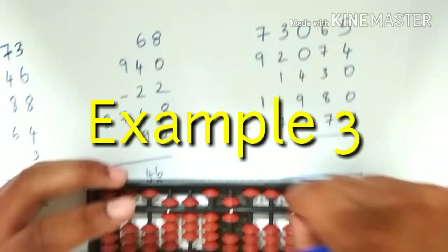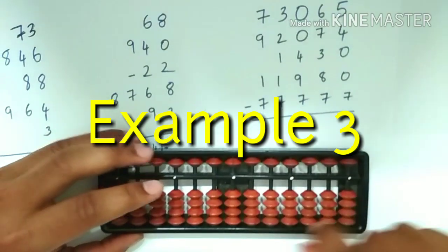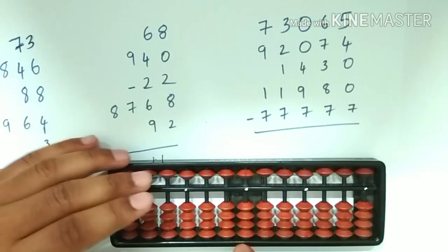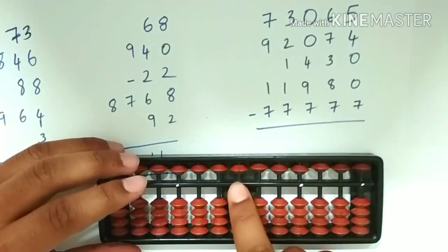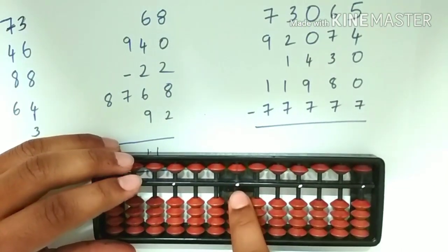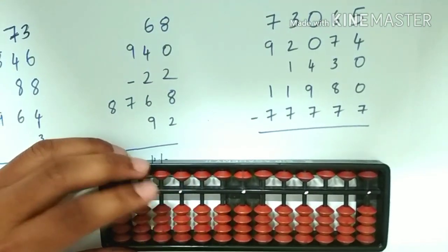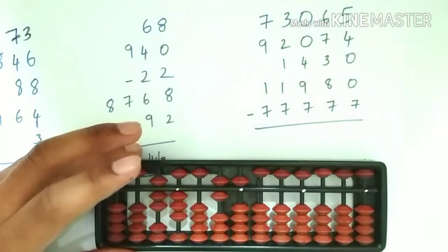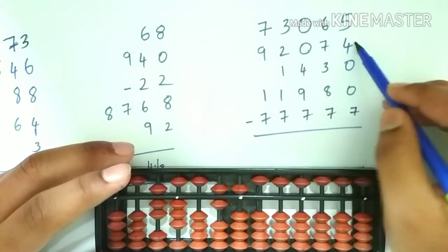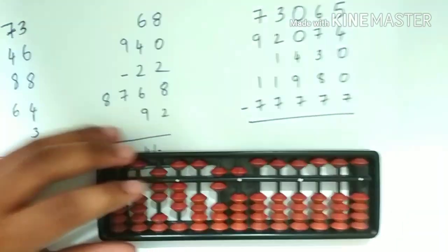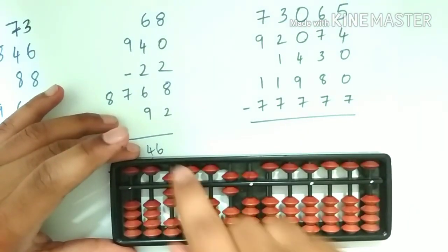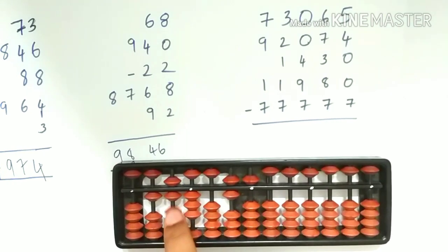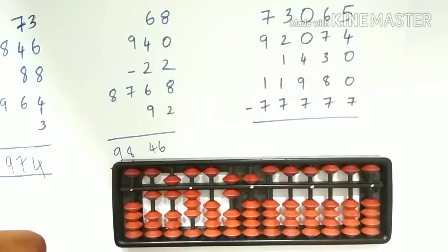Now let's do some 5 digit addition. Follow carefully here. The first number is 73065, which is a 5 digit number, so we will have to place from the 10,000 slot. We have to add 92074, so we will go digit by digit. To add 9 on the 10,000 slot — add the friend 10, less the friend 1, because 1 is a friend of 9.